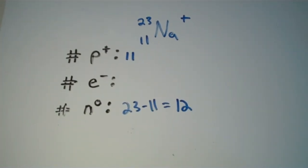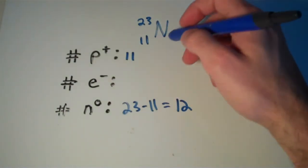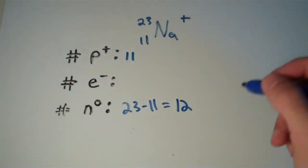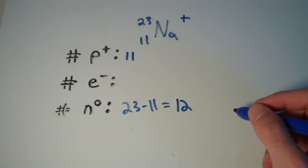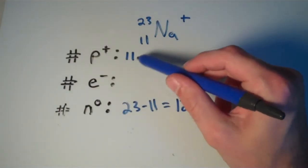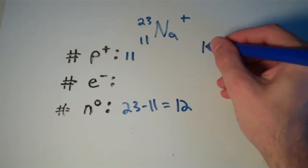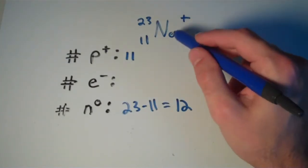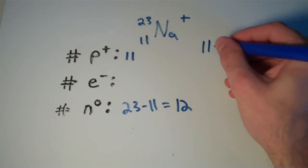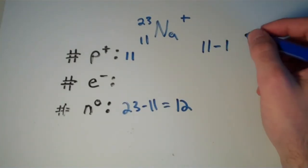But notice that the number of electrons isn't going to equal the number of protons anymore because this thing is charged. It has a plus 1 charge on it. So, normally, if it was neutral, the number of electrons would equal the number of protons. So, that would mean that we would have 11 electrons. But since this is not neutral, this has a charge of plus 1, that means we must have one fewer electron. Because, remember, electrons are negatively charged. So, 11 minus 1 electrons, that's just going to be 10.